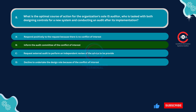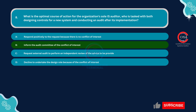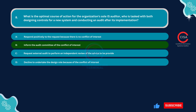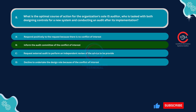Informing the audit committee of the conflict of interest promotes transparency, upholds professional standards, and allows for appropriate measures to be taken to mitigate the conflict while ensuring the integrity of the audit process. Designing controls and then auditing their effectiveness creates a conflict of interest, as the auditor might be less likely to identify weaknesses in controls they designed themselves, compromising objectivity.